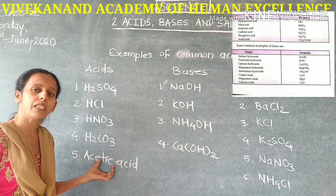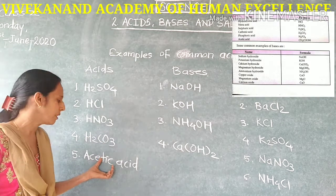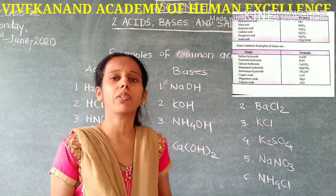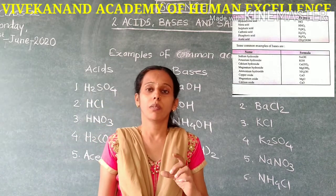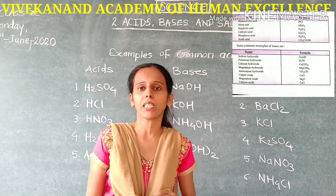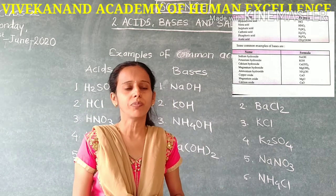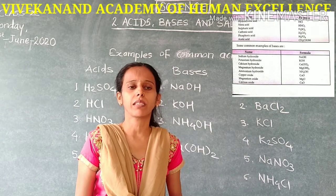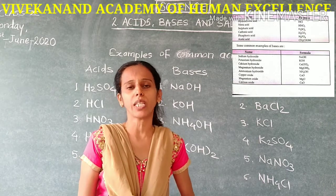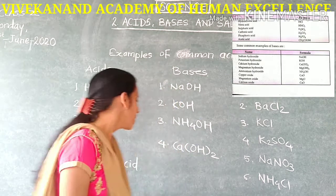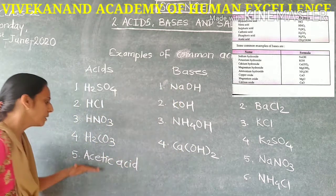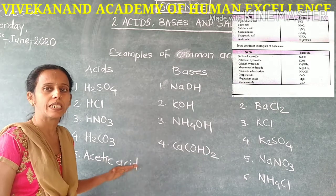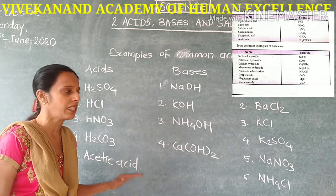Another acid you are knowing is acetic acid, which is an organic acid. Acetic acid comes from vinegar, which contains acetic acid in 8 to 10%. Other organic acids are benzoic acid, tartaric acid, etc.